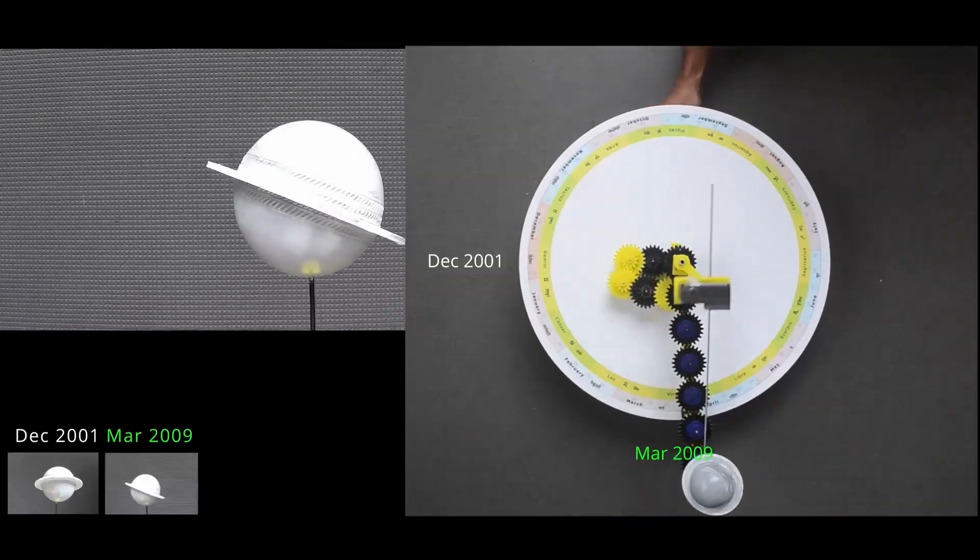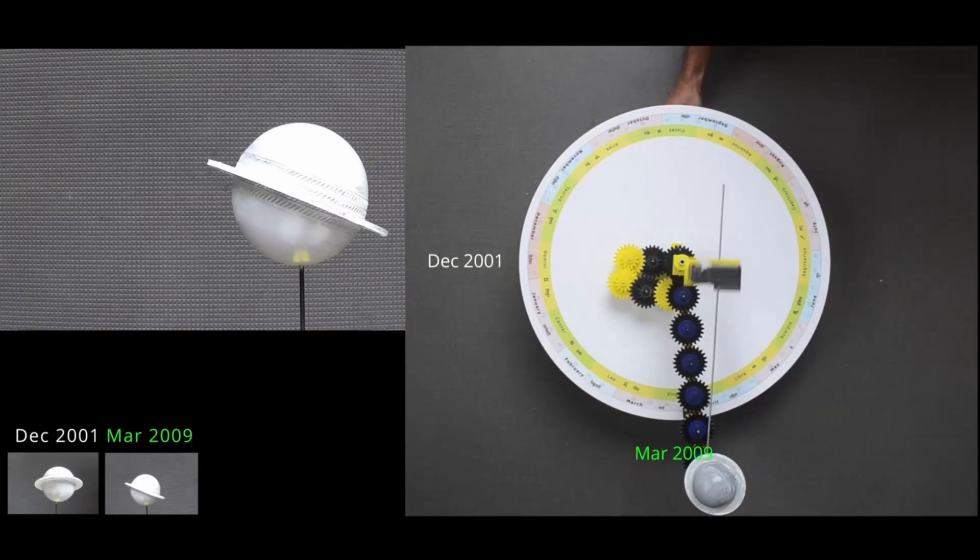Fast forward, March 2009. Saturn is sideways related to the Sun as well as Earth, and we see the rings edge on.